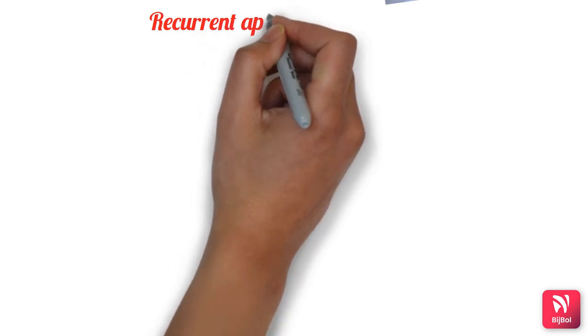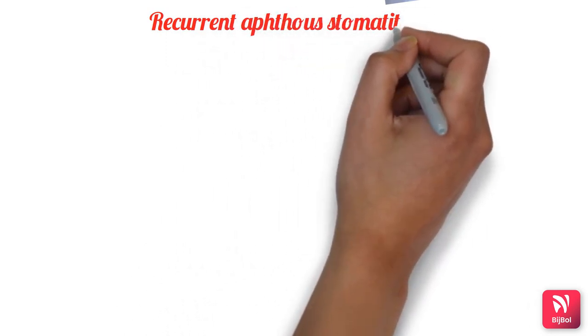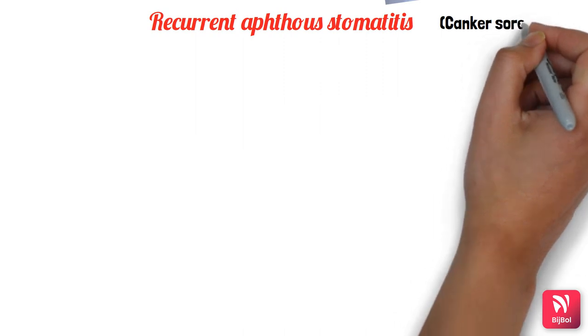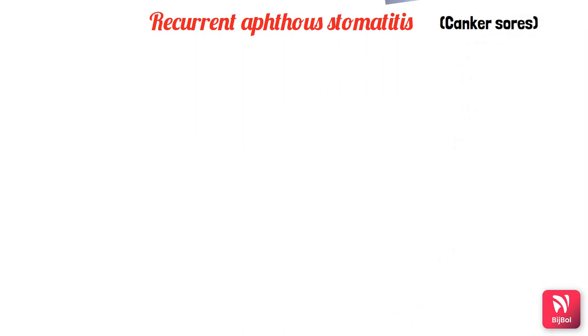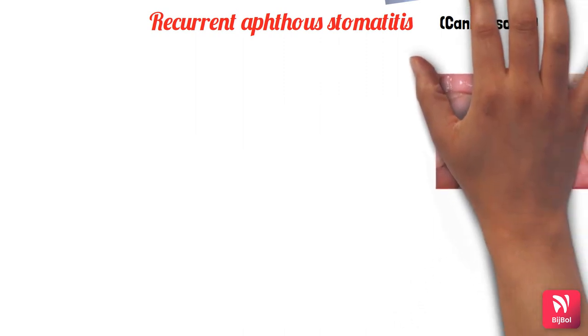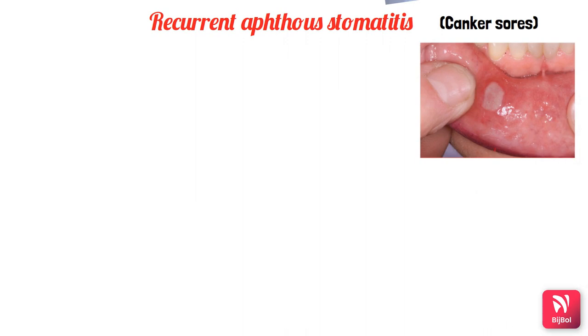The first important disease is recurrent aphthous stomatitis, which is also called aphthous ulcers or canker sores. In aphthous ulcers, there will be development of painful ulcerations within the oral mucosa.